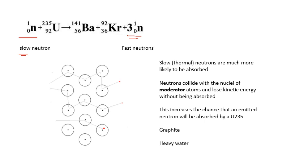If the neutrons are not absorbed by the moderator nuclei, they lose kinetic energy through elastic collisions. These slow neutrons are called thermal neutrons — not quite room temperature, but the idea is they're much slower. Thermal neutrons are much more likely to be absorbed, increasing the chance of a fission event occurring.